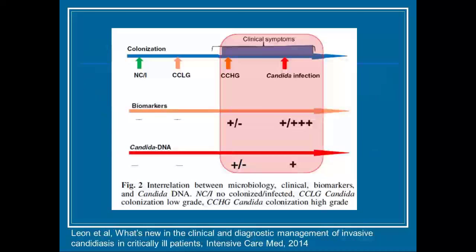This graphic shows that starting with a small amount of candida colonization, as you receive more antibiotics you select out for more yeast, going from low-grade colonization to high-grade colonization, then to invasive infection. The idea is that as you go along this continuum, biomarkers start to become positive, as does testing that looks for candida DNA — giving us more options for diagnosing candida invasive infection earlier than we otherwise would.